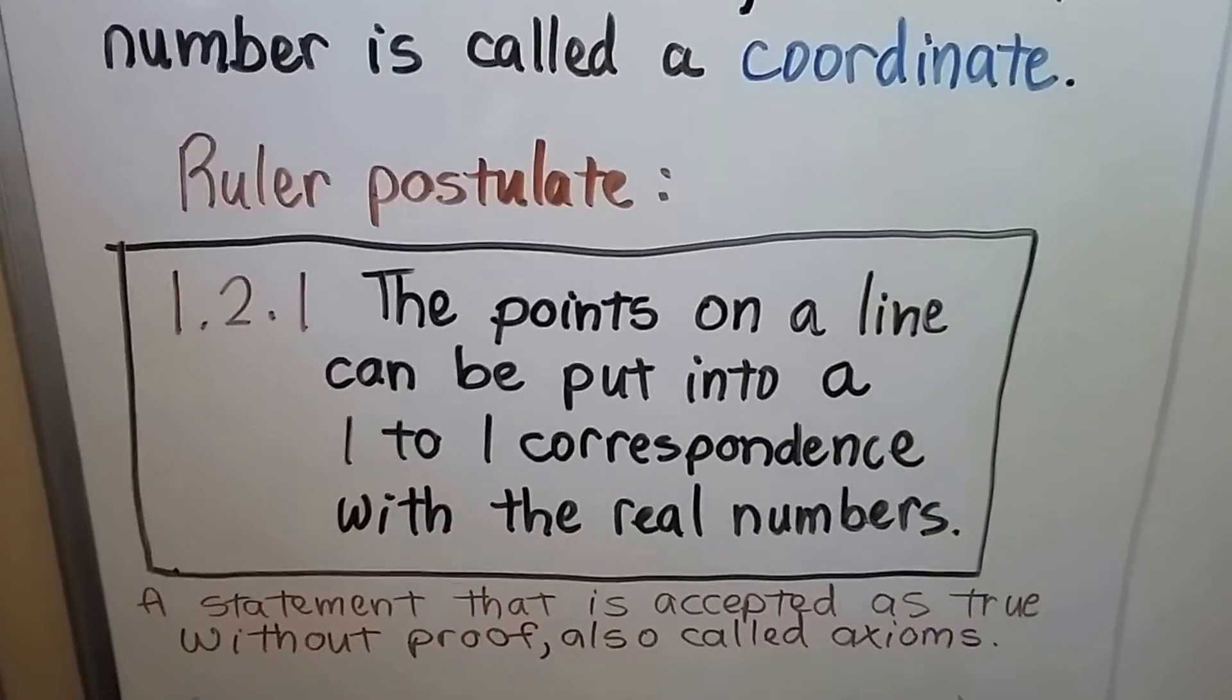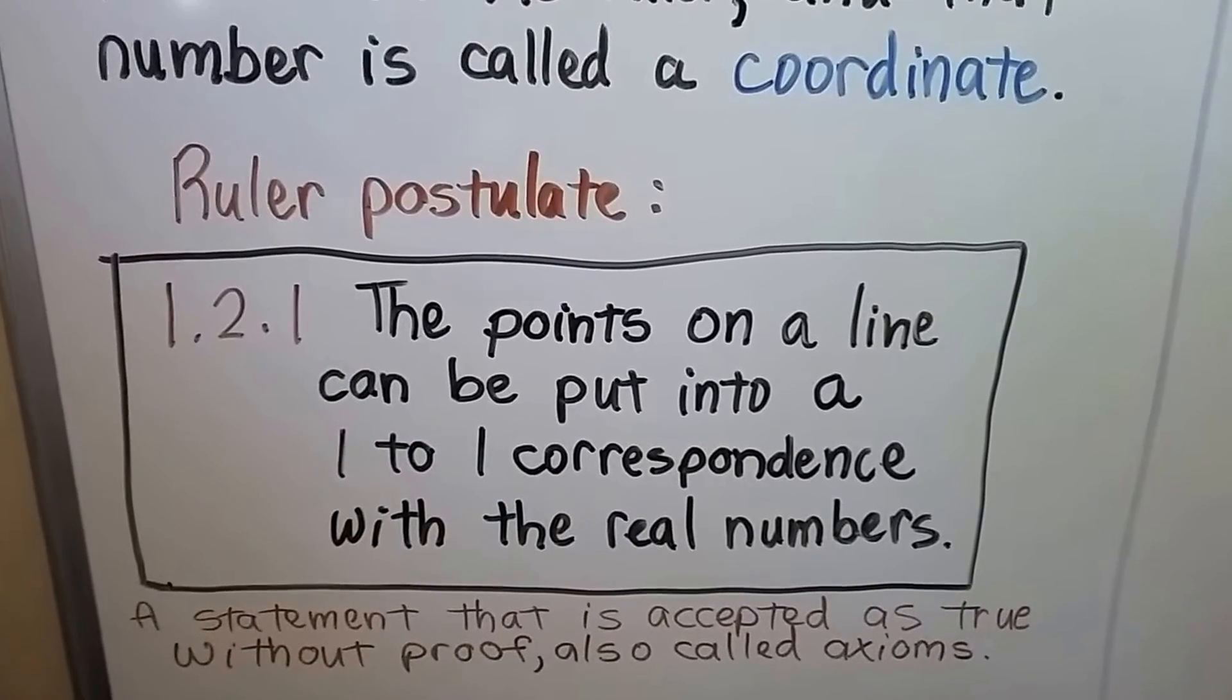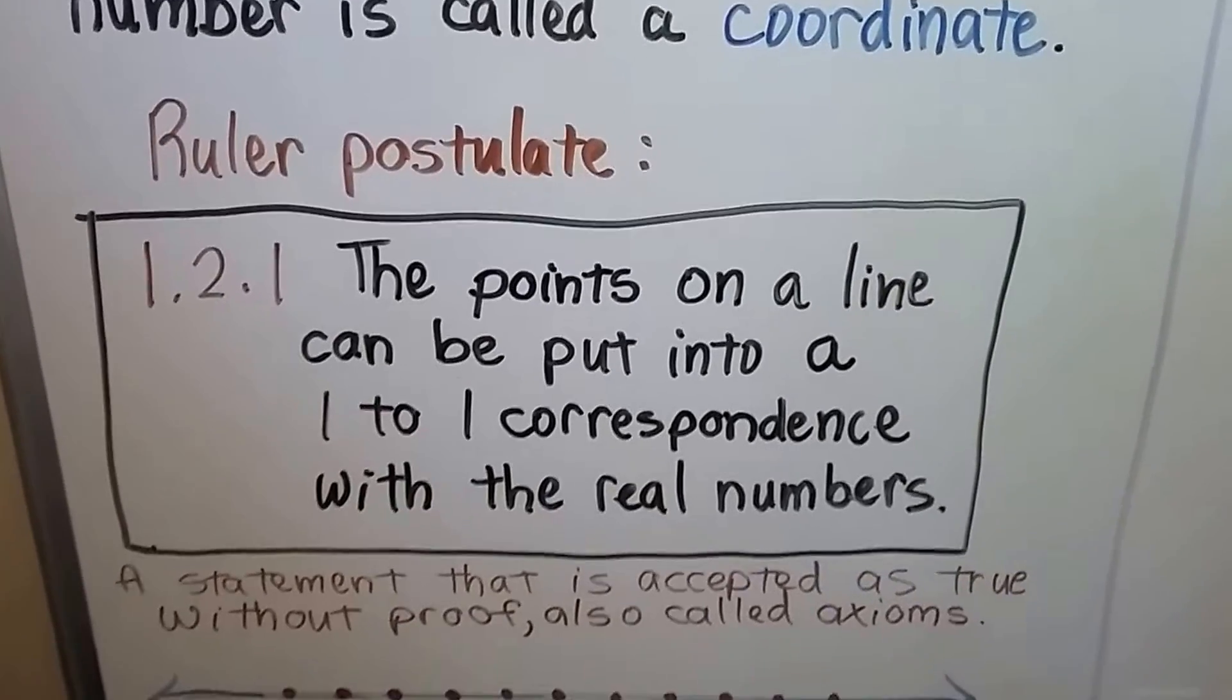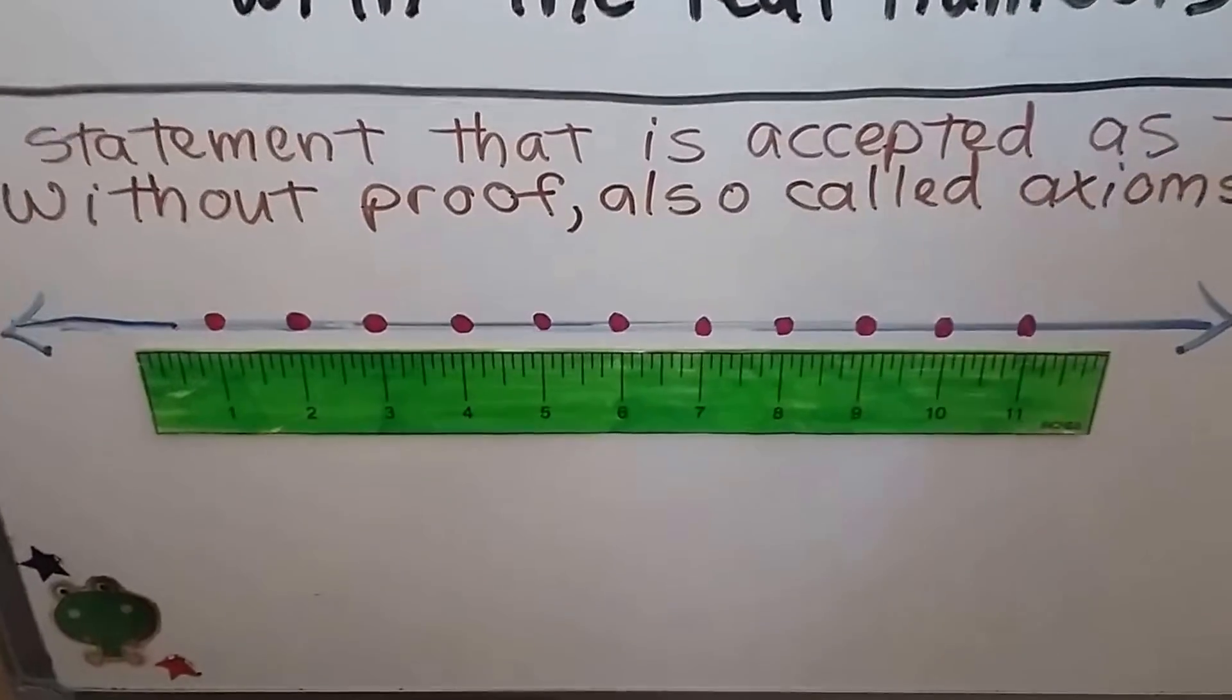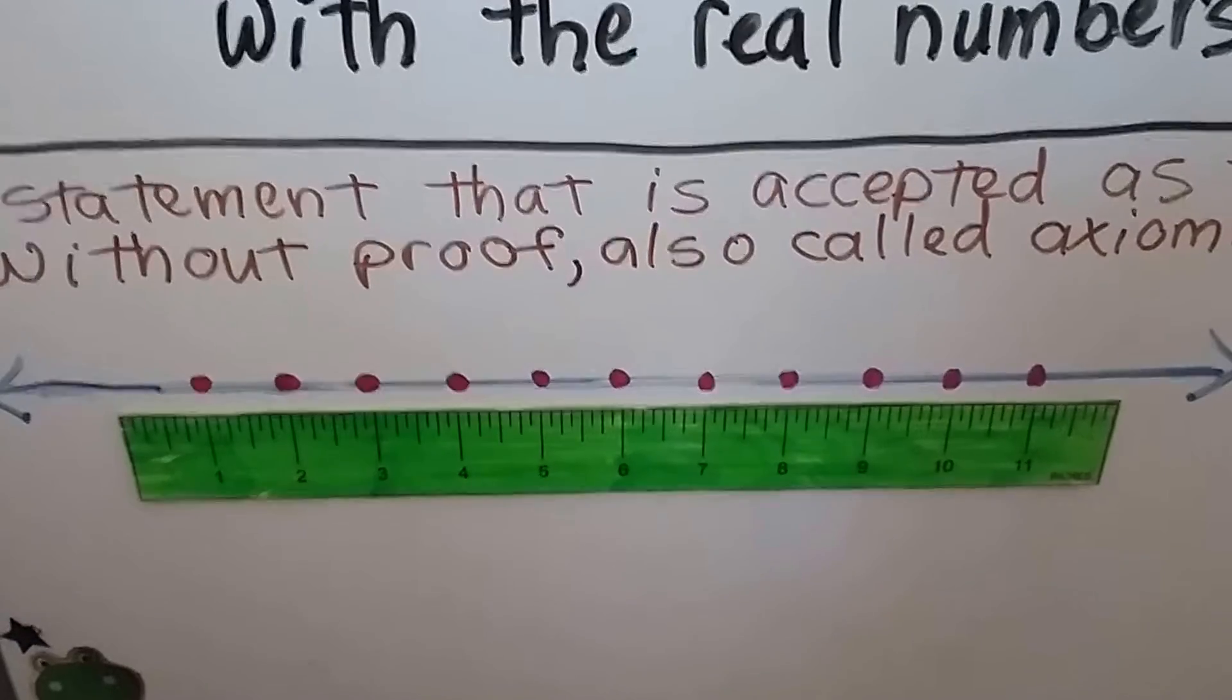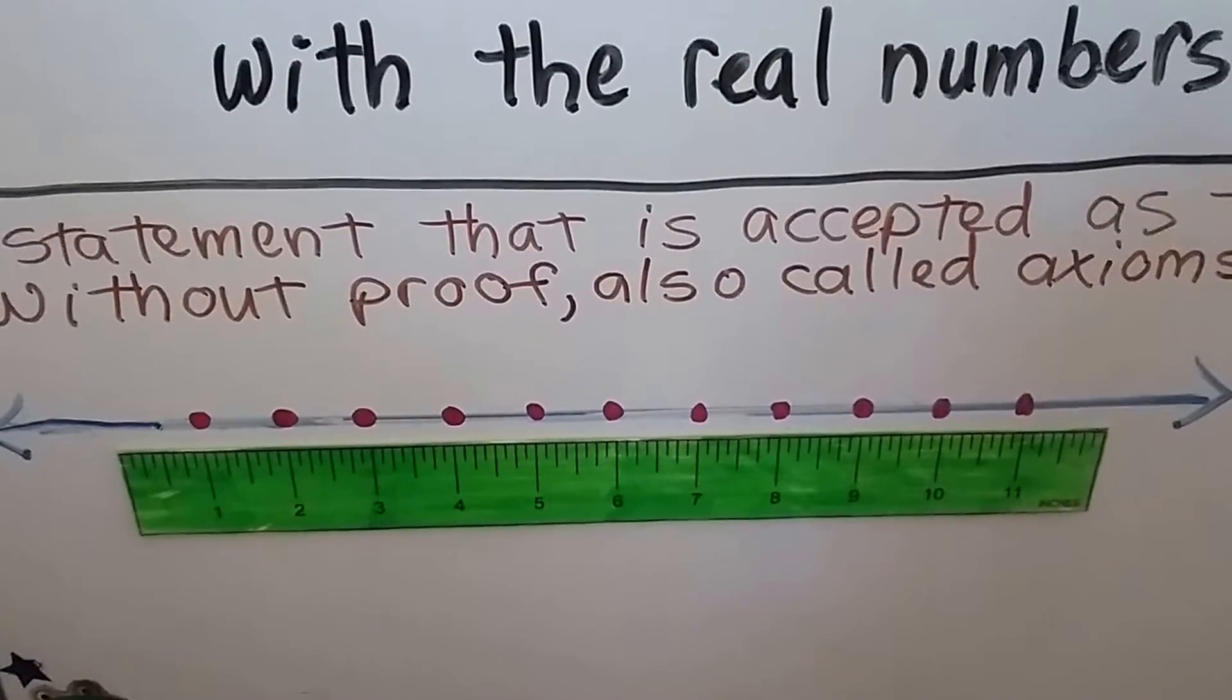The points on a line can be put into a one-to-one correspondence with real numbers. Now remember, a postulate is a statement that is accepted as true without proof, and they're also called axioms. We talked about that in the last video. So this says the points on a line can be put into a one-to-one correspondence with real numbers. And we look at this ruler, and we can put a point, a coordinate, for each number with a one-to-one correspondence.